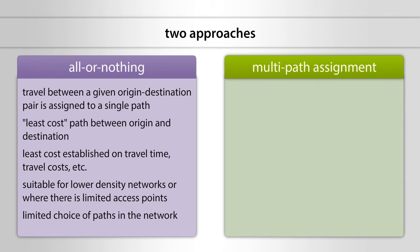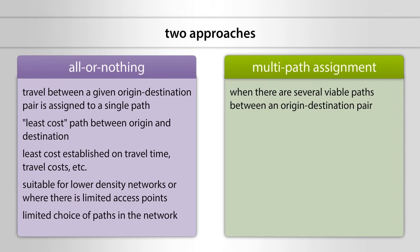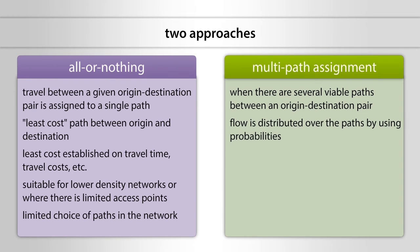When there are several viable and attractive paths between an origin-destination pair, then the multi-path approach is relevant. In this approach, the flow is distributed over the paths by using probabilities.